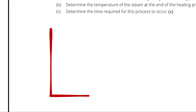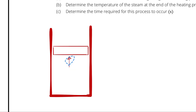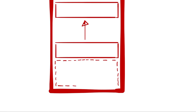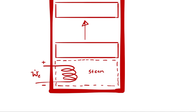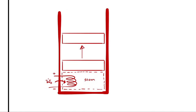I will begin with a system diagram. I'm defining two state points here: state 1 is the beginning of the process and state 2 is the end of the process. My goal is to pick out two independent intensive properties for both state points that will fix both state points, at which point I can look up whatever I need in the steam tables.